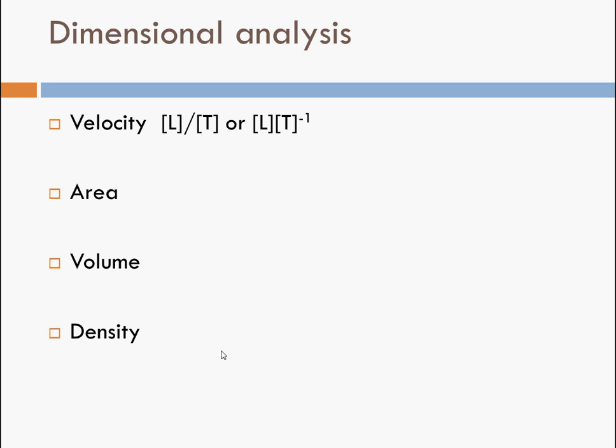So velocity then is just length divided by time, or another way of writing that is length times t to the negative 1. All this negative 1 refers to is the idea that in this case you would be multiplying length times 1 over t. So this negative 1 means that t is in the denominator of a fraction. Hopefully that's some quick review for you there.